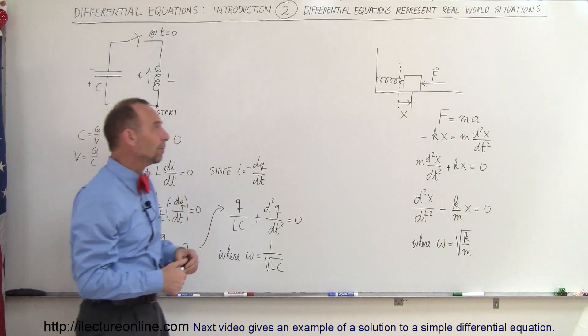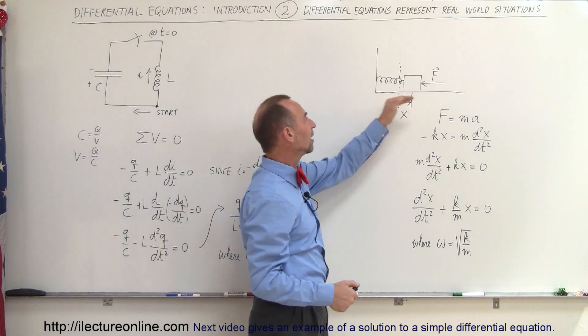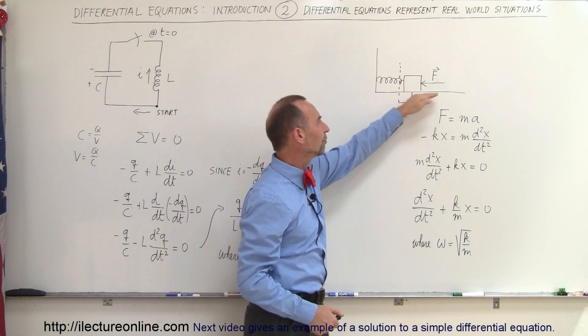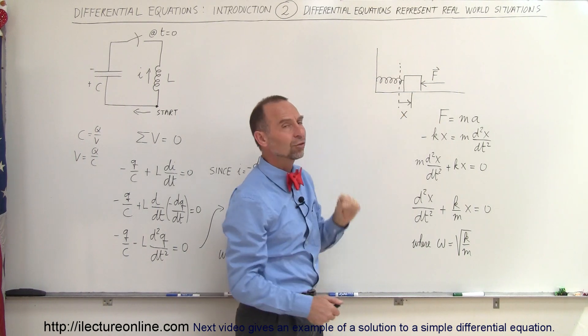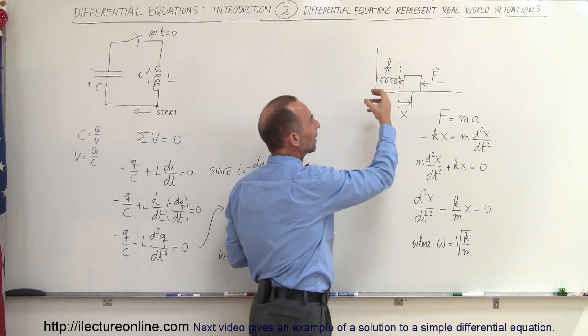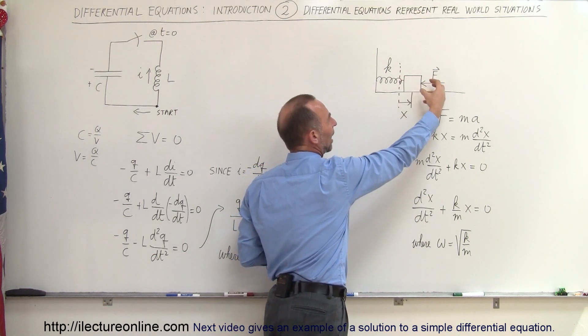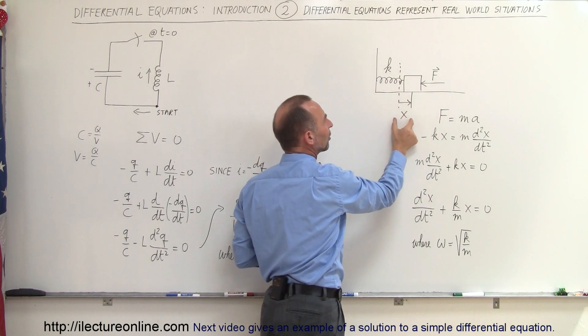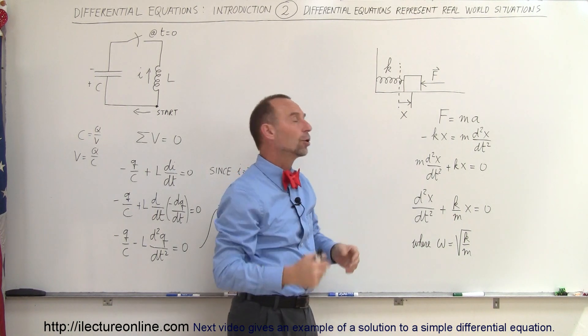Here's another simple example. Here we have a mass that is sliding back and forth across the floor without any friction attached to a spring. Again, the spring has spring constant K. And so now we extend the mass just out away from the equilibrium point at distance X, and now we let it go.